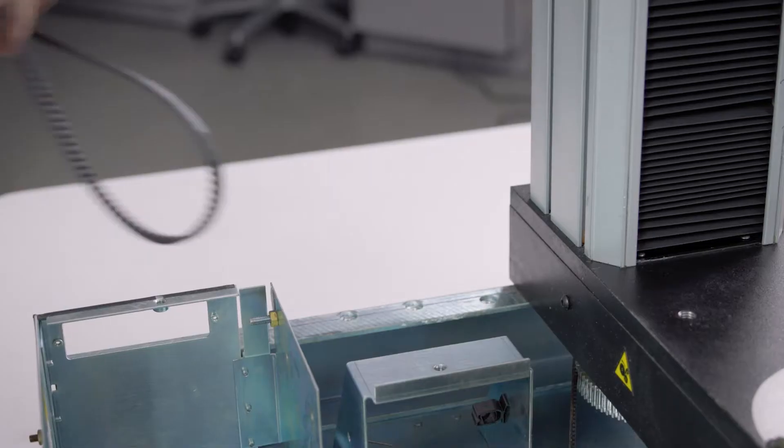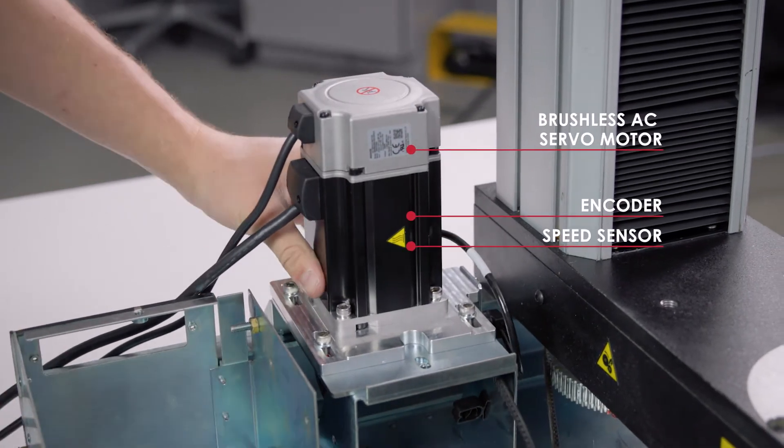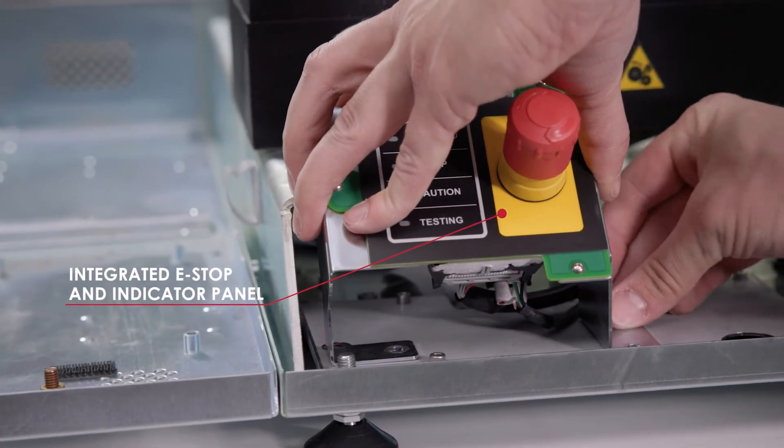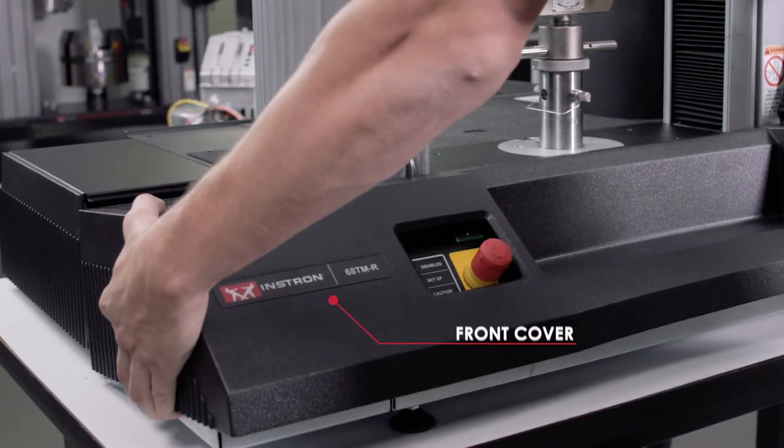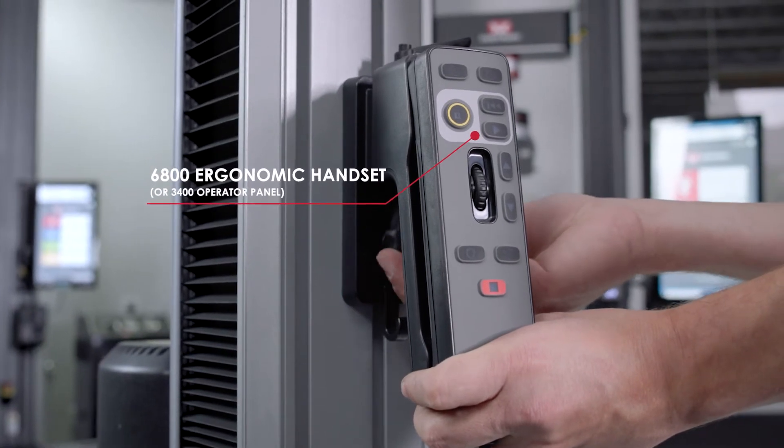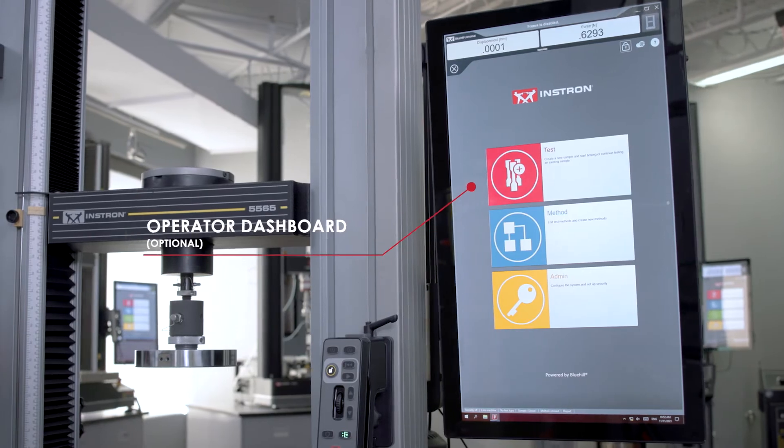The upgrade will provide you with a new brushless AC servo motor, encoder, speed sensor, new drive belt, integrated e-stop and indicator panel, front cover, 6800 ergonomic handset or 3400 operator panel, an optional operator dashboard, and more.